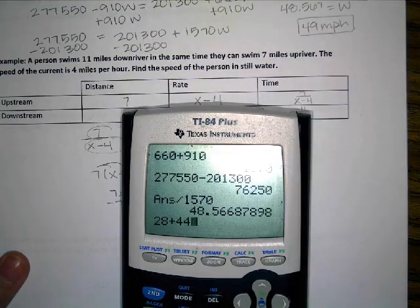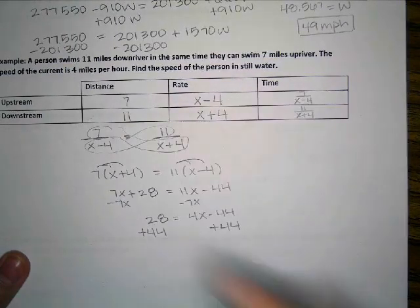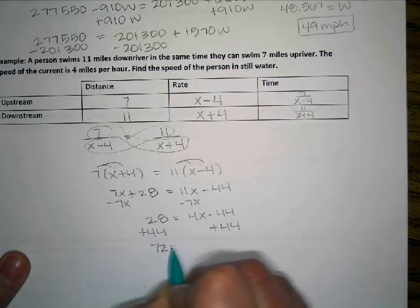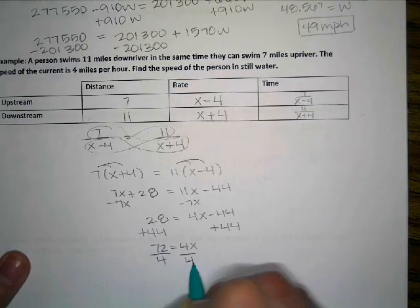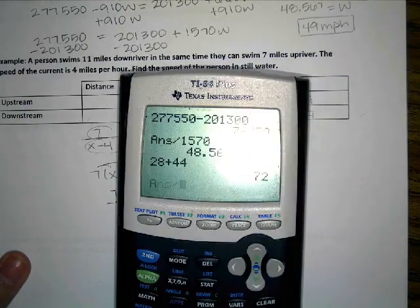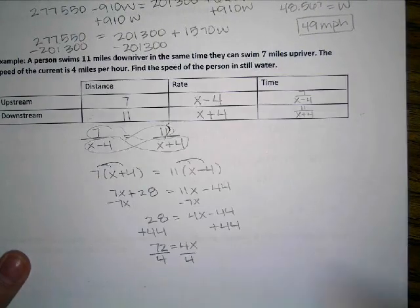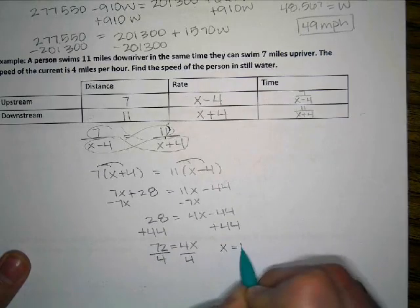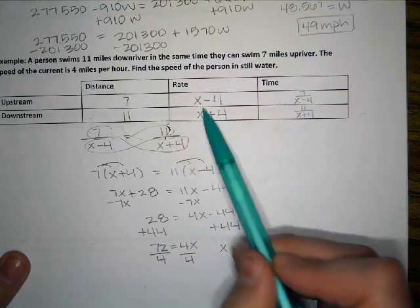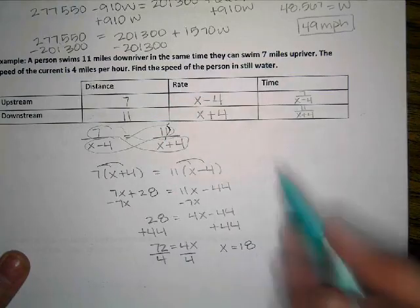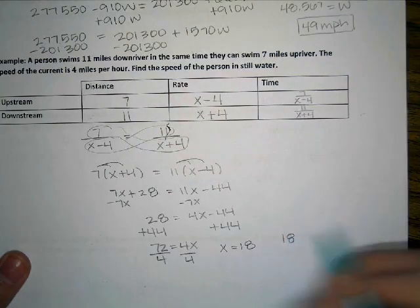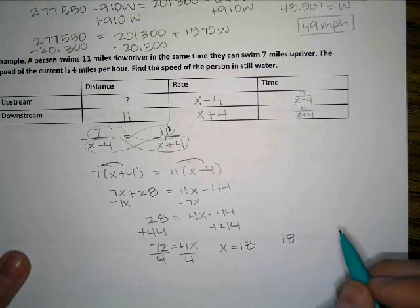72. So, 72 equals 4x. So, x equals 18, and remember, x was what we used for the still water. Find the speed of the person in still water. That would be 18 miles per hour is the units for the problem.